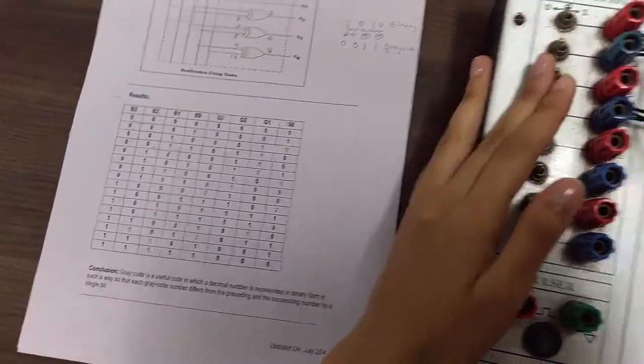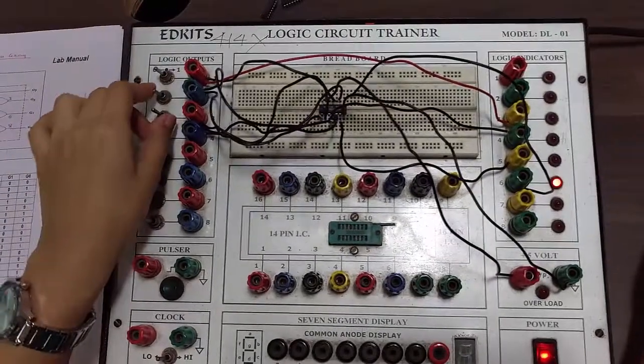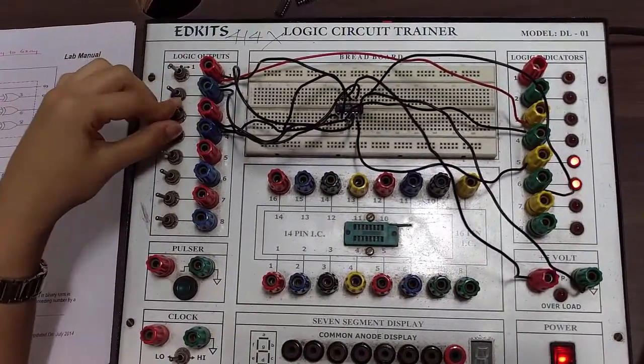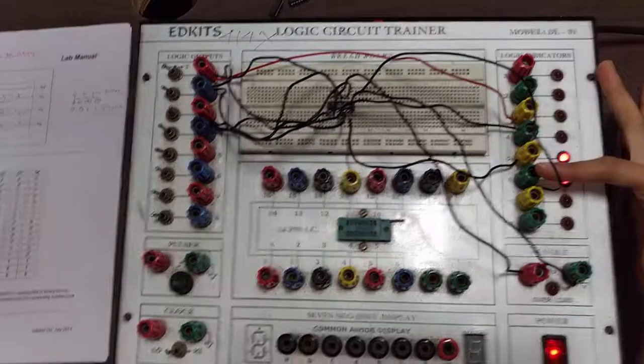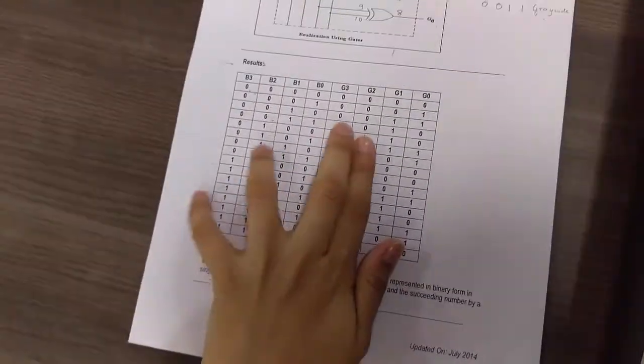Next we are giving 0001. For that we need to get 0001 and we are getting that at the output. Next we check 0010, and for that we are getting 0011.